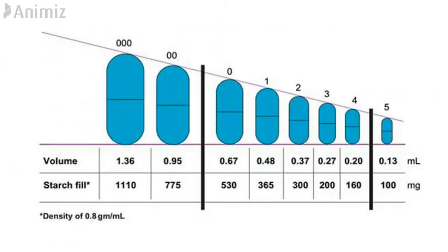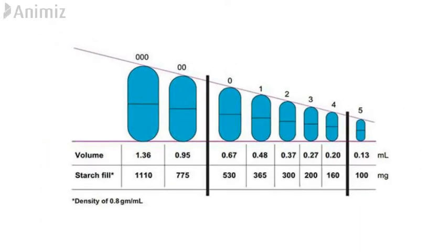Hard gelatin capsules come in eight sizes, with triple zero being the largest size, which can fill 1.36 ml or 1.1 gram of solid content, and size five being the smallest, which can fill up to 0.13 ml or 100 mg of solid content.